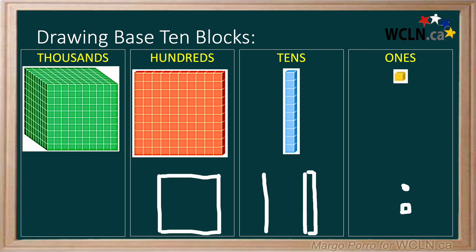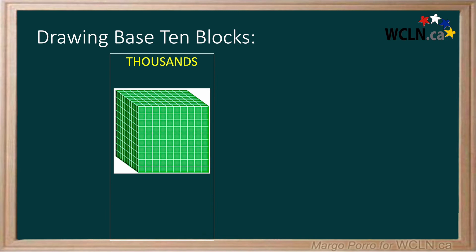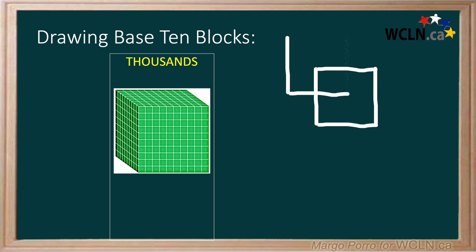1000s blocks may look tricky, but there are some easy ways to draw them. Let's take a close look at one way. First, draw a square for the front of the 1000s block. Next, draw an overlapping square, like this. Finally, connect the corners, like this.